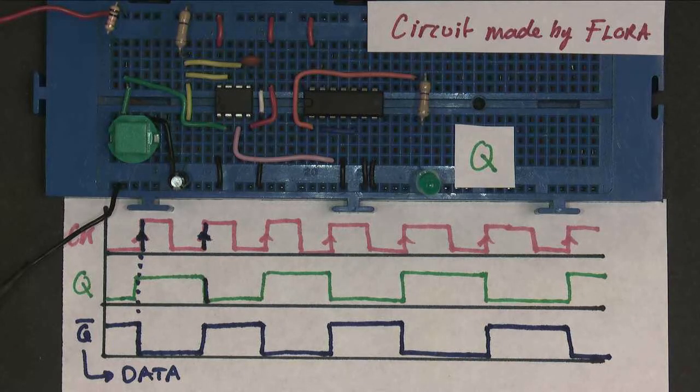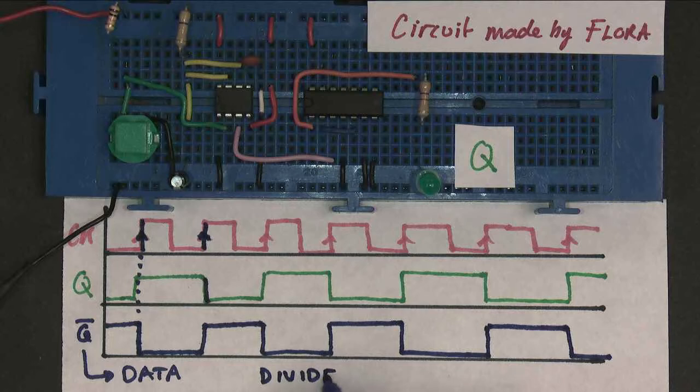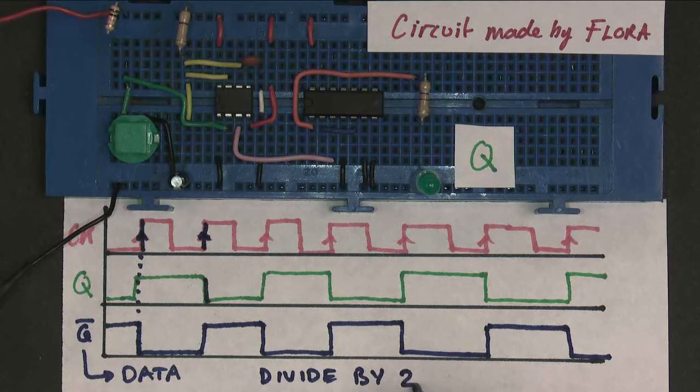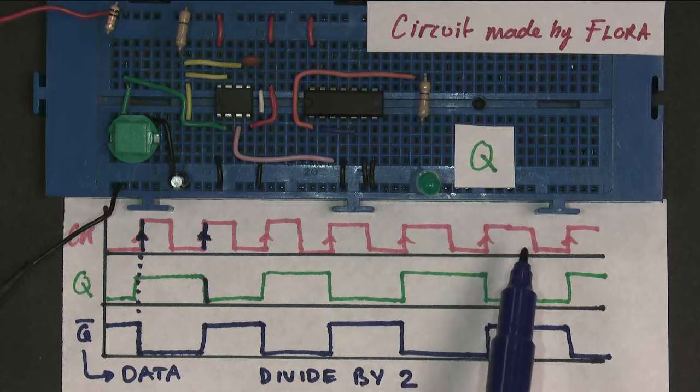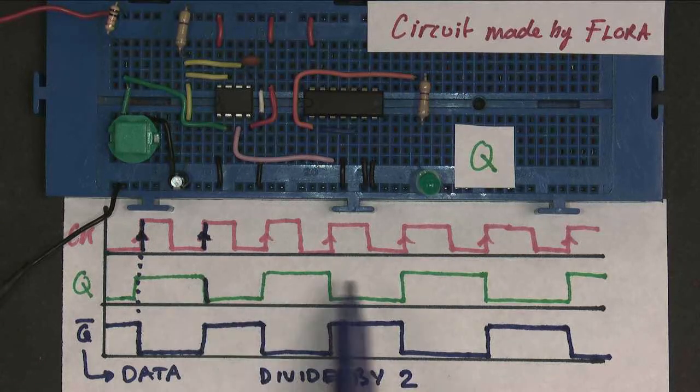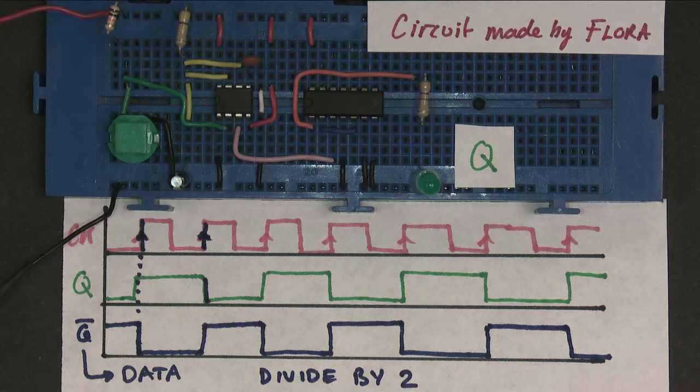Like that. So this is called a divide-by-two counter. I wonder why. Well, the reason is because here I have 1, 2, 3, 4, 5, 6 clock pulses, and here I have 1, 2, 3 output pulses. The frequency of the output is half the frequency of the input.